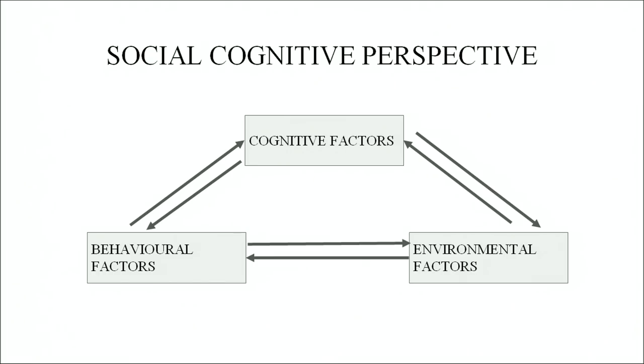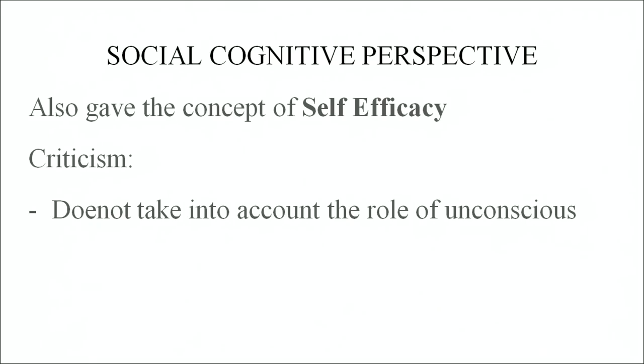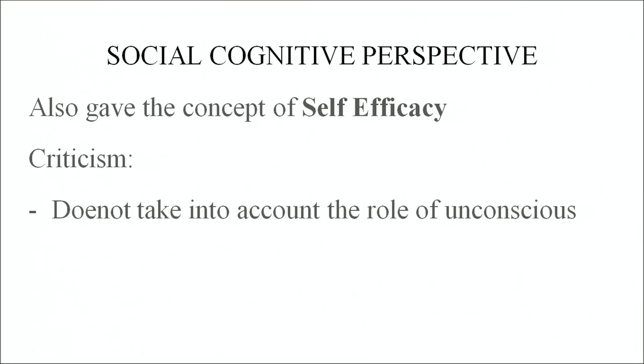Hence moving on, there was a theory given by Albert Bandura known as the social cognitive perspective. Bandura said that individuals do not behave in isolation. There is always a reciprocal determinism, which means a reciprocal interaction between three factors: behavioural factors, environmental factors — which means the social structure and social context in which an individual is behaving — and cognitive factors, since an individual is capable of thinking, feeling, determining, controlling and regulating his behaviours. All three of these factors interact with each other and have an effect on each other. Bandura also gave the concept of self-efficacy, where he talked about how an individual has an understanding of what his capabilities are and what he can or cannot achieve. However, his theory was also criticized on the basis that it does not account for the role of the unconscious.